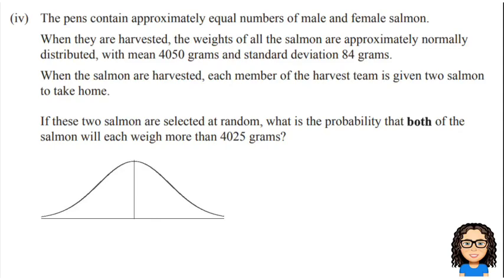So the question has now evolved. We're still talking about salmon, but now they're talking about combining the male and female salmon together and harvesting them. So when they're harvested, the weight has now a mean of 4050 grams and a standard deviation of 84 grams.